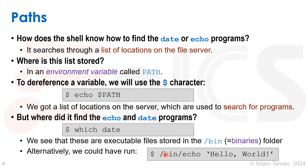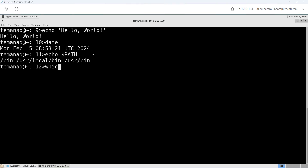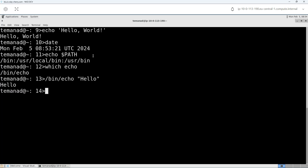Alternatively, we could directly run the program. Instead of looking through the path, we could run /bin/echo — that's the absolute path to the echo command — and then provide the arguments. I write which echo and see it's at /bin/echo. I could just run /bin/echo hello, and I see it returns hello because I directly ran that.